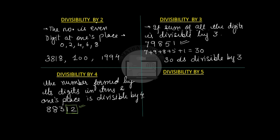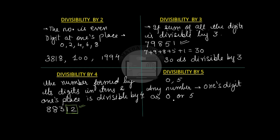Divisibility by 5 is quite easy. Looking at the multiples of 5 — 5, 10, 15, 20 — we see that multiples of 5 either end with a 0 or a 5. So any number which has the ones digit as 0 or 5 is divisible by 5. For example, 75325 ends in 5, and 75320 ends in 0 — both are divisible by 5.